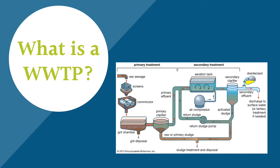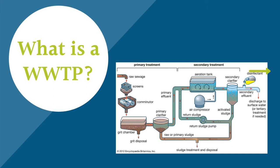We will go into the aeration tanks in more detail shortly, but this is where the wastewater receives most of its treatment. From the aeration tanks, the treated influent is then moved through filtration and a disinfection stage before final discharge. Some plants may utilize an additional step called tertiary treatment to add additional oxygen into the discharge before it is released from the plant.